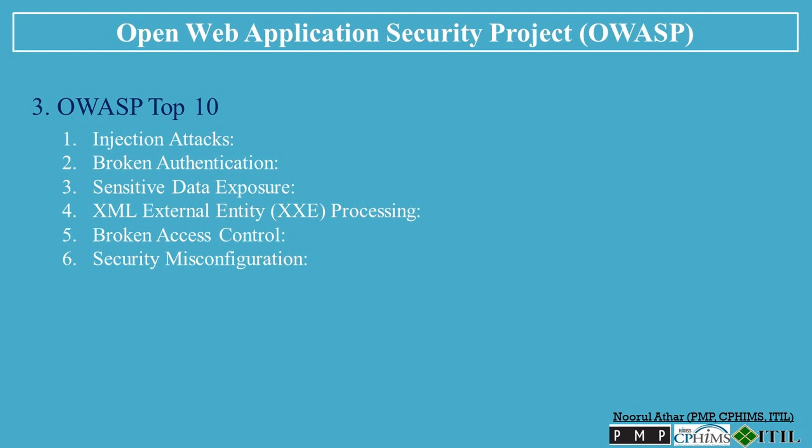Number 6: Security Misconfiguration. Security misconfiguration happens when an application, server, database, or network is not securely configured. Default configurations, unnecessary services, and improper permissions can lead to vulnerabilities. Always follow secure configuration guidelines, disable unused features, and regularly review and update your configurations.